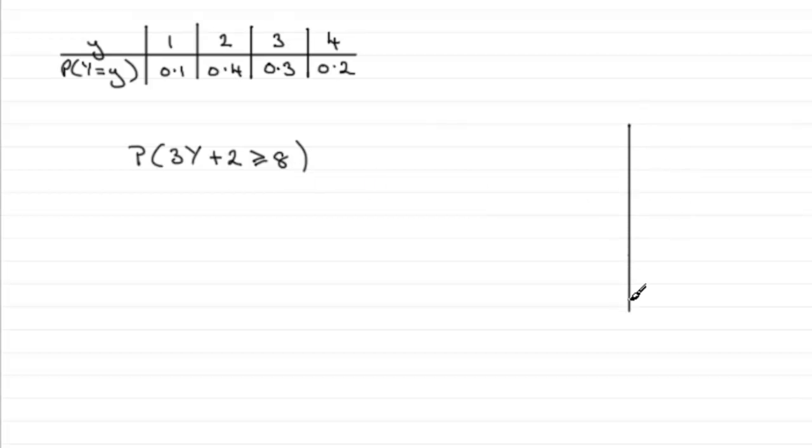All I've got to do is work out where 3y plus 2 is greater than or equal to 8. You'll notice I've changed the random variable Y to a small y, just to get the selection of values of y up here.